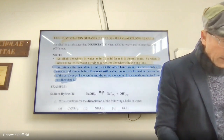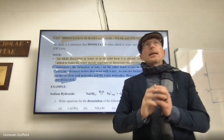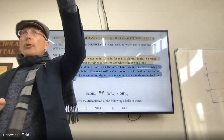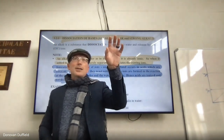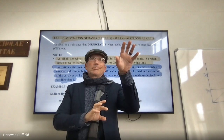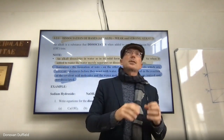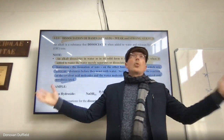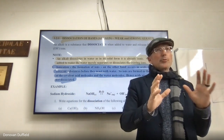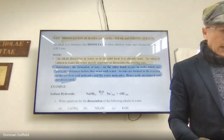Before moving on, let's revisit dilute versus concentrated. Concentration is about how much solute versus solvent. A concentrated base has a lot of base relative to water — it can be a weak base like aluminium hydroxide but still be concentrated. A strong base like sodium hydroxide can be dilute if there's a lot of water. Dilute means a lot of solvent and a small amount of the solid base.